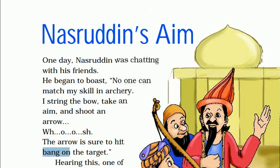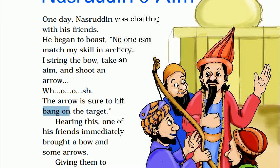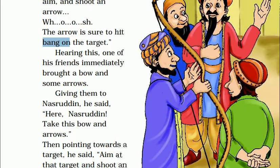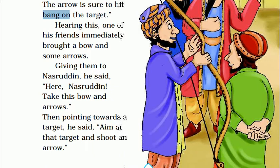Hearing this, one of his friends immediately brought a bow and some arrows — yeh sab sunne ke baad uska dost gaya aur ek dhanush aur kuch teer le ke aaya. Giving them to Nasruddin, he said — here Nasruddin, take this bow and arrows. Then pointing towards a target, he said — aim at that target and shoot an arrow. Us lakshya ko target karo aur teer chhodo.